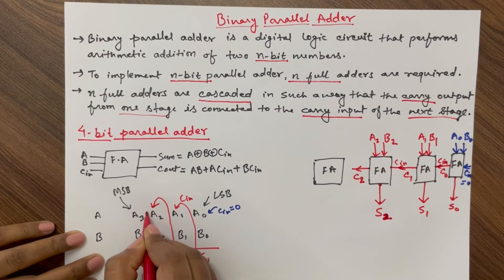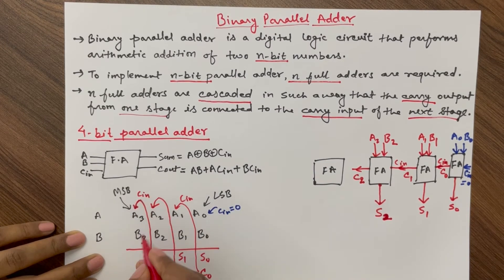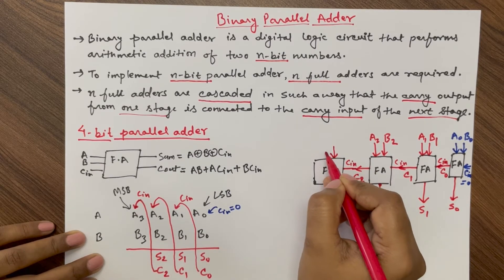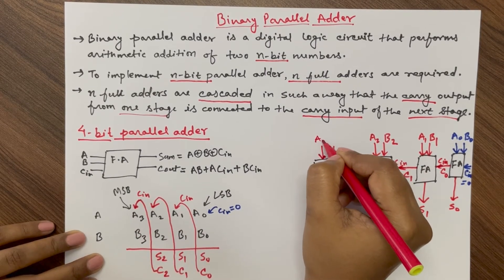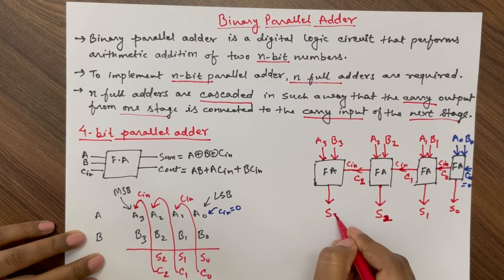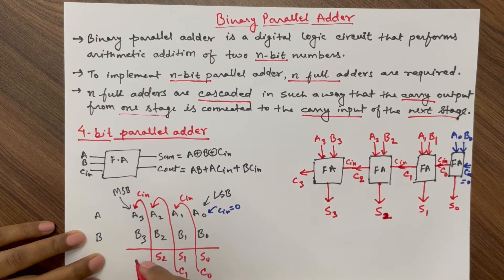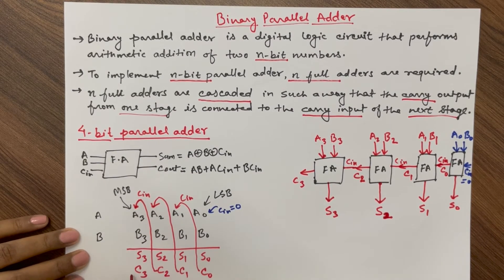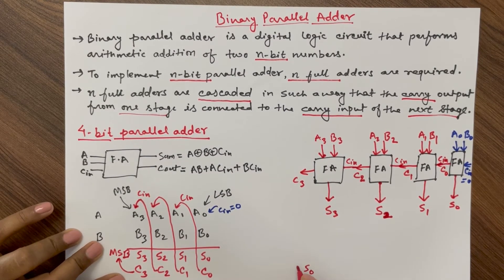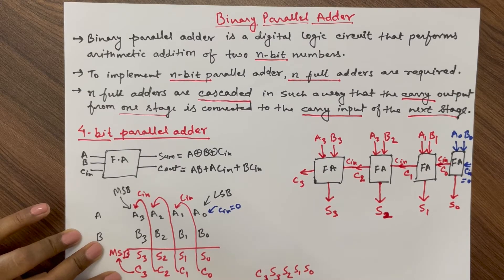The output of the third stage is sum S2 and carry C2. C2 acts as the carry input for the fourth stage, whose other inputs are A3 and B3. The output of the fourth stage is sum S3 and carry output C3. Since this is the last stage, C3 will act as the MSB of the addition. So the final addition result is written as S0, S1, S2, S3, and C3.